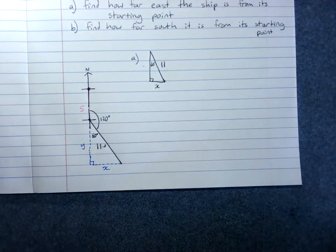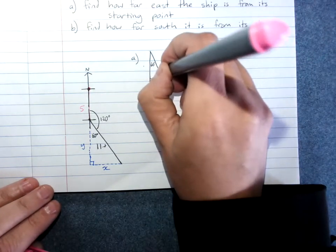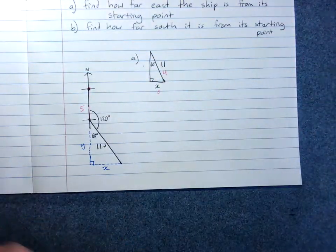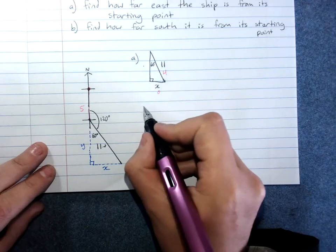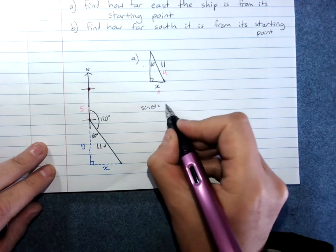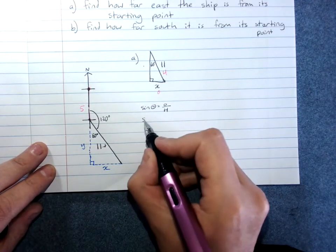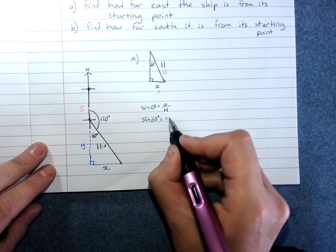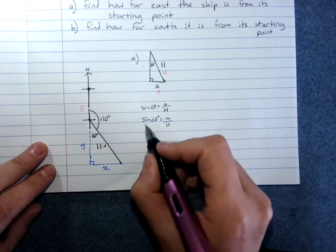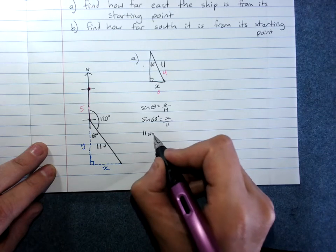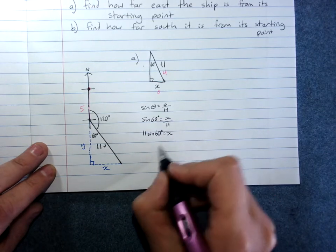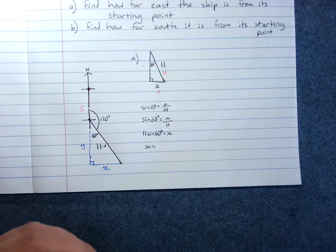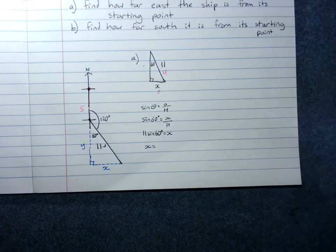So your steps are, label your sides, hypotenuse, opposite. Choose your ratio. Sin theta equals opposite over hypotenuse. Substitute your values. Rearrange. And use your calculator in degrees mode.